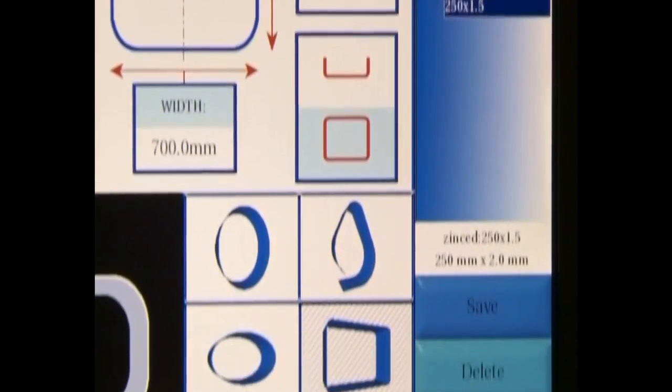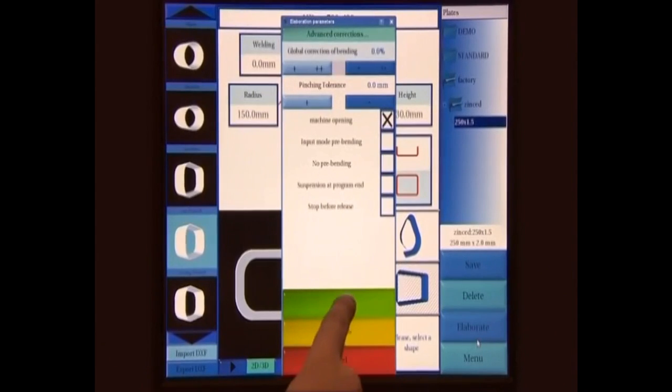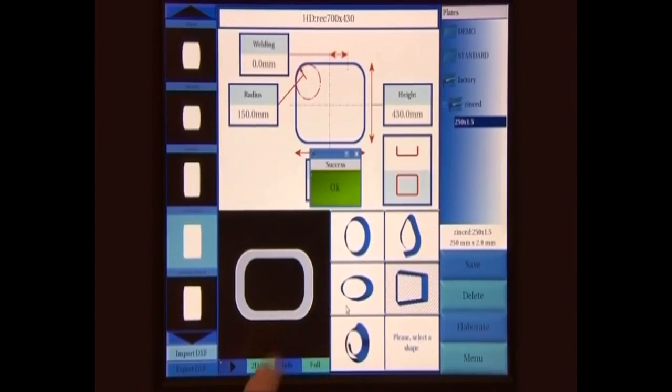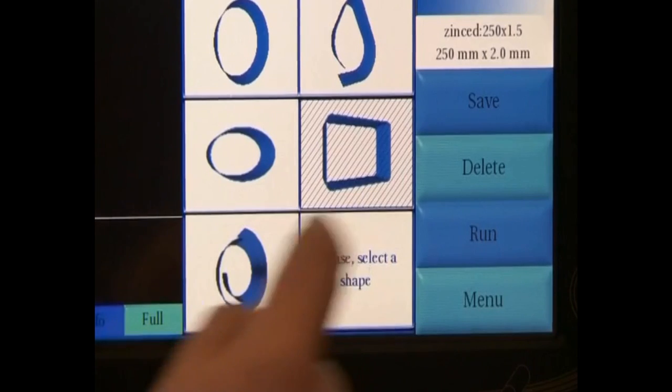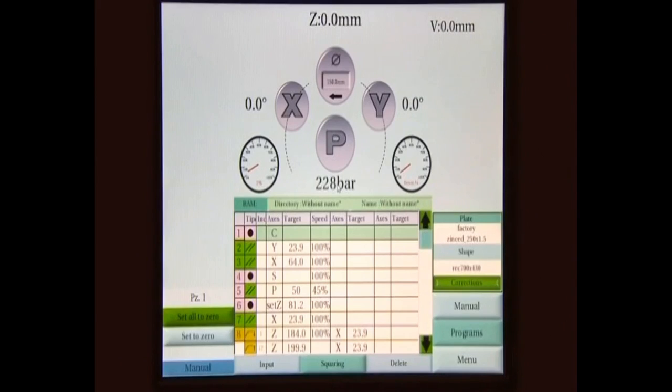Pressing the elaborate button, the automatic generation of the program is started. It's actually performed after the confirmation or change of some basic options. Pressing the execute button, the new program is transferred to the execution window, from which we can run it.